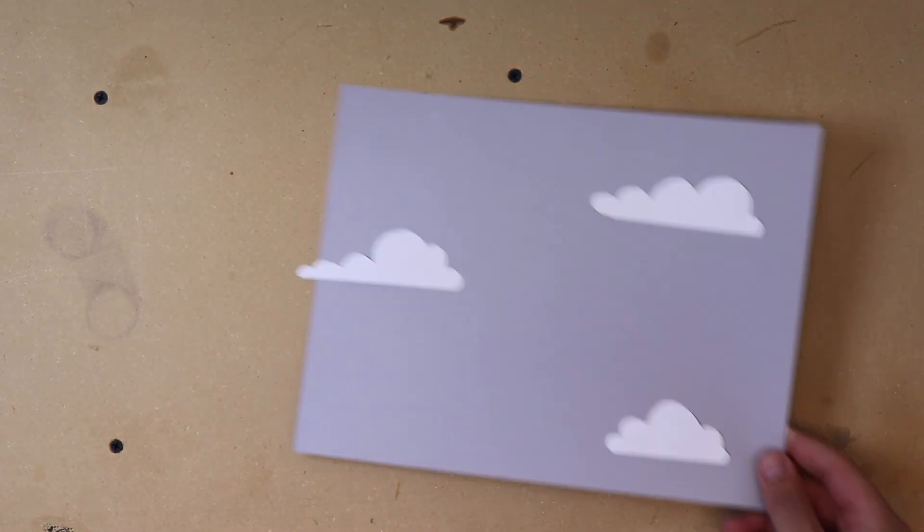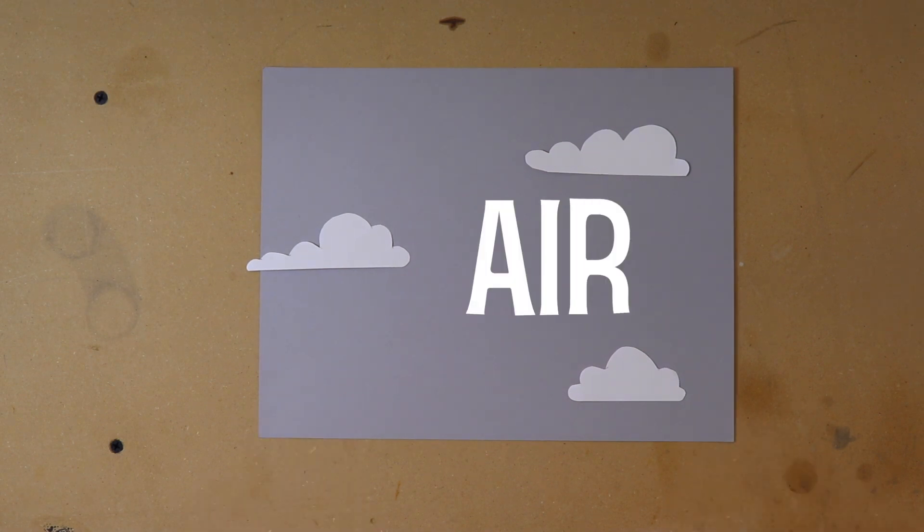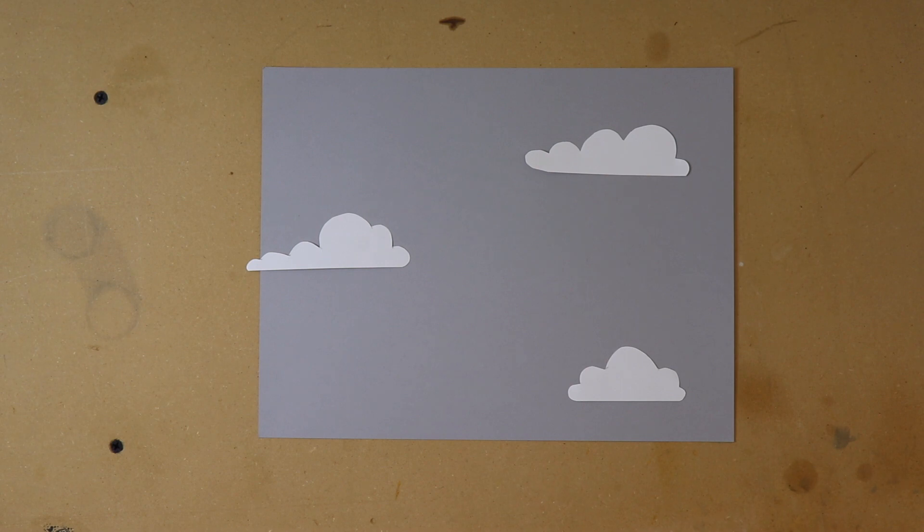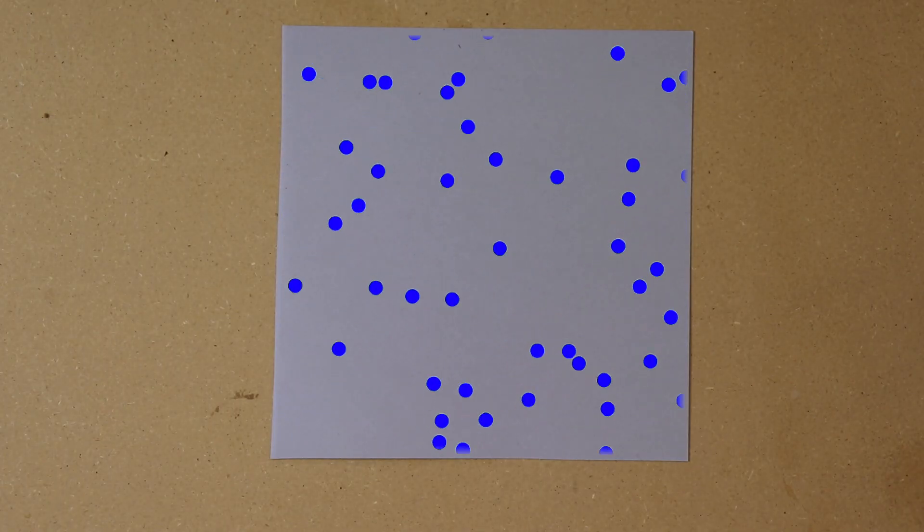To understand lift we need to understand some things about air. Now, while it's easy to think of air as just empty space, the air around us is actually made up of a bunch of tiny particles bouncing around and colliding with nearby surfaces and with each other.